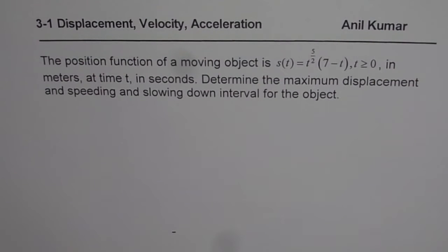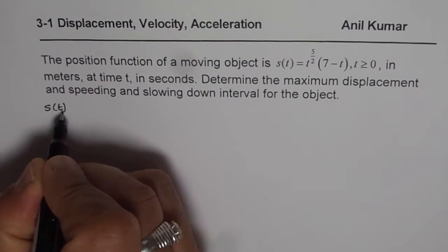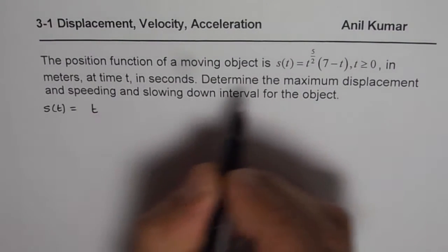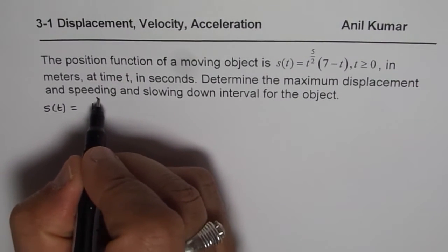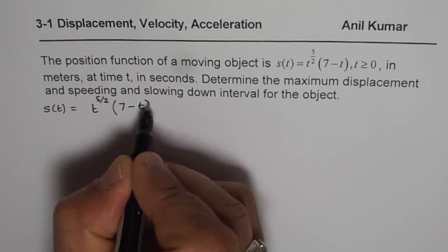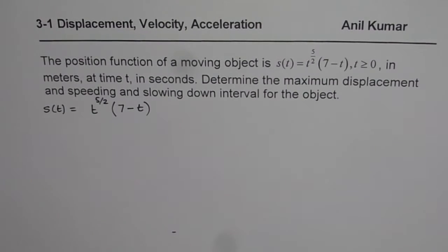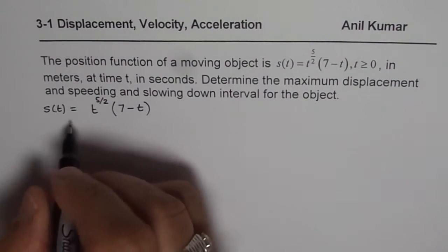You can pause the video, answer, and then look at my suggestion. These kinds of questions appear in test papers and are sometimes difficult for students to answer. Now let's look at this given expression: s(t) = t^(5/2) * (7 - t). If you want to find the derivative of this function, it is a good idea to expand first and then find the derivative, so you do not have to apply the product rule.